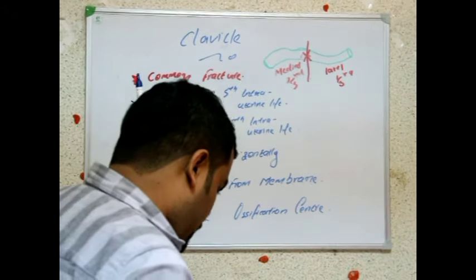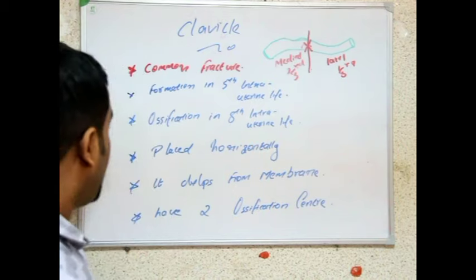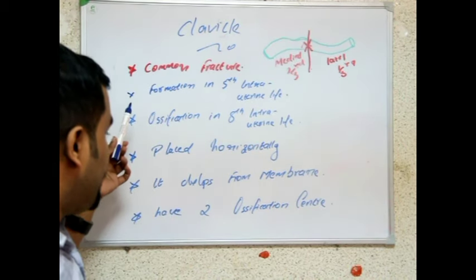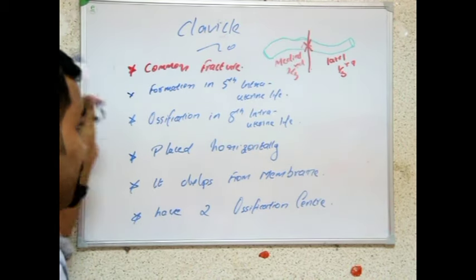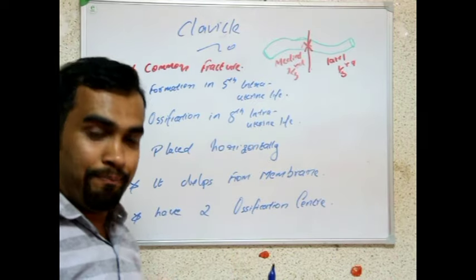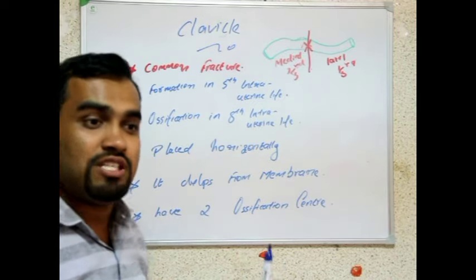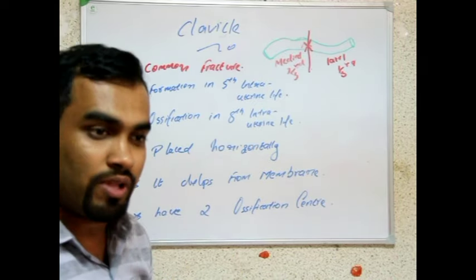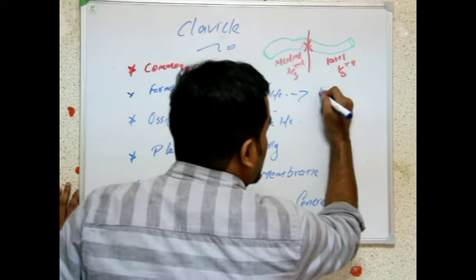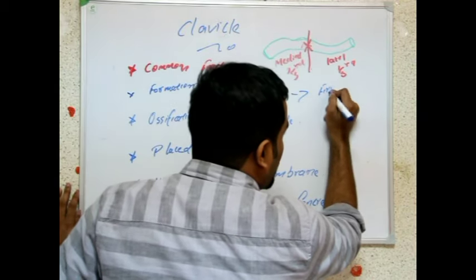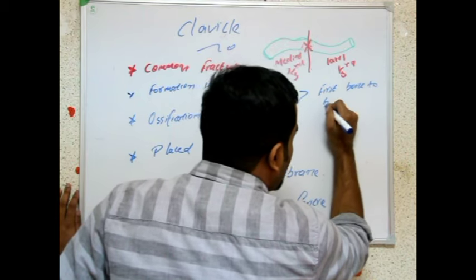We explained the common fracture, the formation in intrauterine life, and ossification. Clavicle is also the first bone to be formed in intrauterine life — the first bone to be formed.